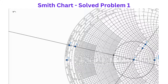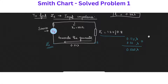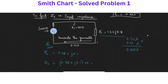From the Smith chart, we have marked the normalized input impedance as 0.48 plus j0.1. The actual input impedance value is obtained by multiplying the normalized impedance by R0, which gives 0.48 times 50 equals 24 plus j5 ohms. That is the input impedance. This is how we find the input impedance on the Smith chart. Thank you.